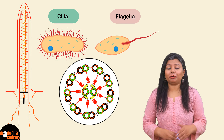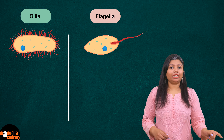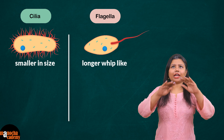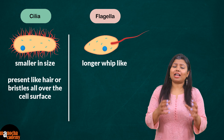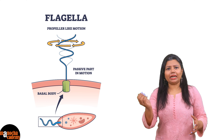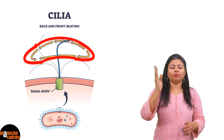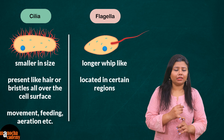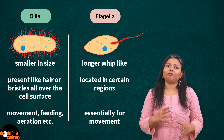Structurally, cilia and flagella are very similar, but there are differences. Cilia are much smaller in size; flagella are much longer and whip-like. Cilia are present like bristles all over the cell surface, while flagella are located in certain regions. Flagella shows undulating or rotatory motion, whereas cilia show pendular motion — moving in one direction. Cilia are responsible for movement, feeding, and aeration; flagella are essentially for locomotion.